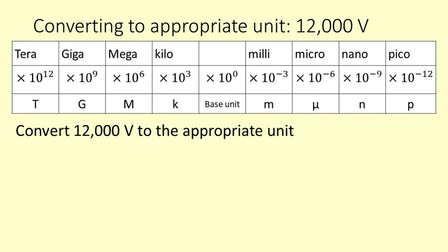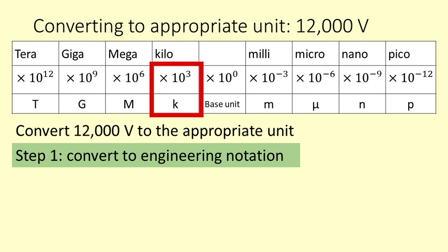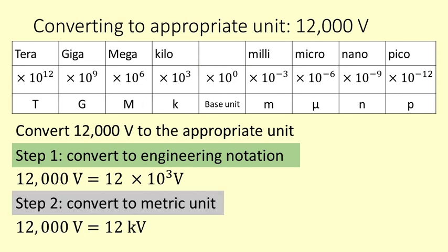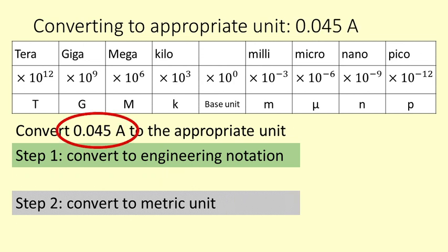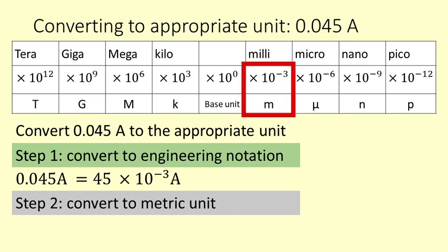Converting to the appropriate unit. You generally want to give your quantity in the unit that matches the engineering notation. So 12,000 volts is 12 times 10 to the 3 volts — 10 to the 3 corresponds to kilo, so 12,000 volts is 12 kilovolts. 0.045 amps converts to engineering notation as 45 times 10 to the negative 3, and 10 to the negative 3 corresponds to milli, giving 45 milliamps.